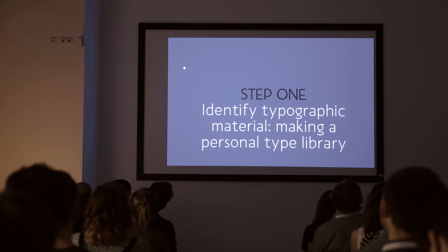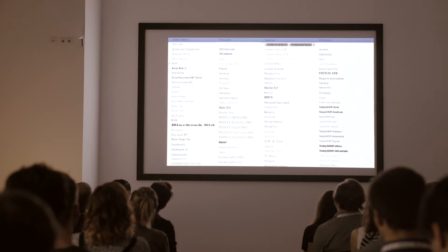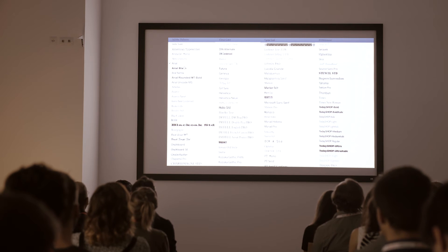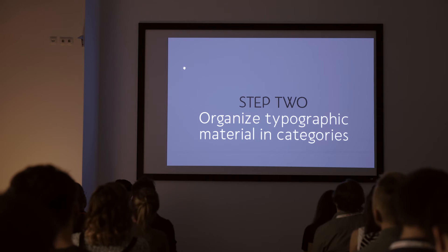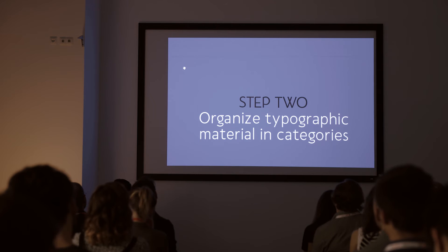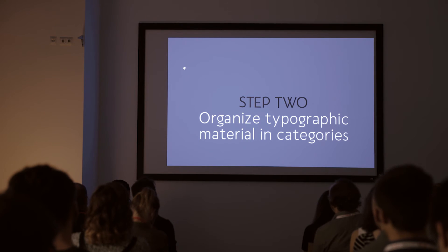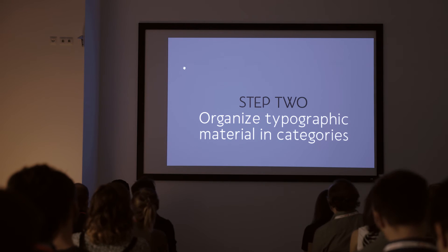Step one: the first step of this strategy is for the graphic designer to identify the elements of their personal type library — knowing the fonts they have in their workstations to gain control over it. Step two is to give order to this resource through categorization by visual characteristics. The main difference between categories and classifications is that the first aims only to establish groups, and it can work among any type classification.